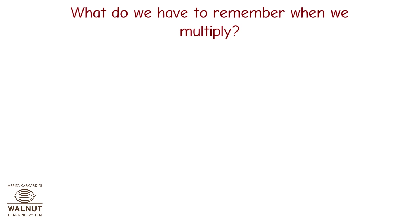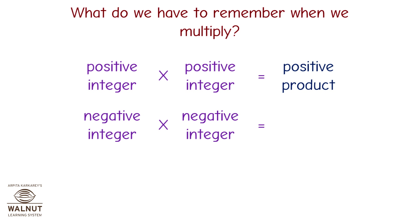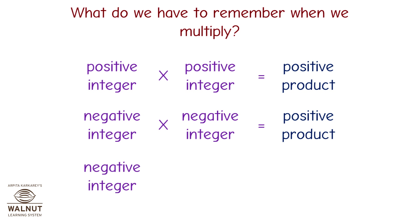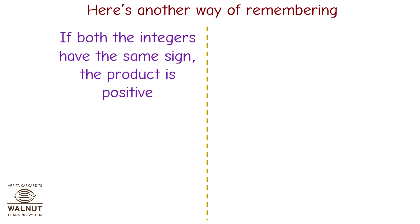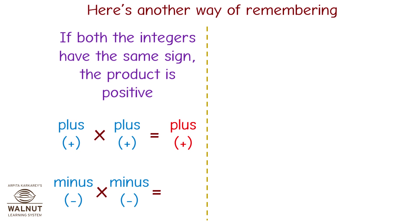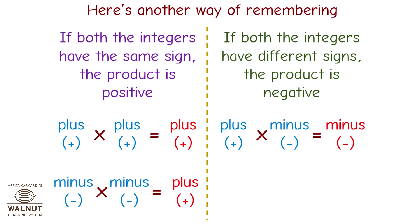What do we have to remember when we multiply? Positive integer multiplied by positive integer is equal to positive product. Negative integer multiplied by negative integer is equal to positive product. Negative integer multiplied by positive integer is equal to negative product. Here's another way of remembering: if both integers have the same sign, the product is positive — plus multiplied by plus equals plus, minus multiplied by minus equals plus. If both integers have different signs, the product is negative — plus multiplied by minus equals minus, minus multiplied by plus equals minus.